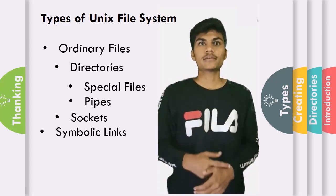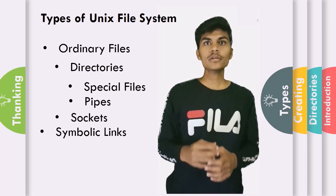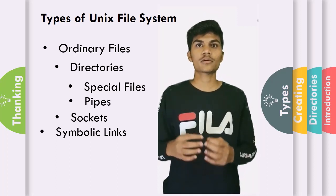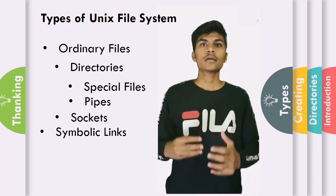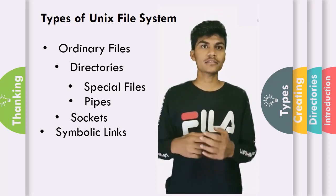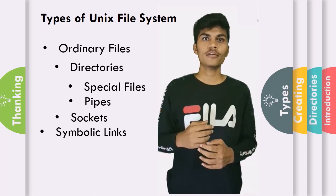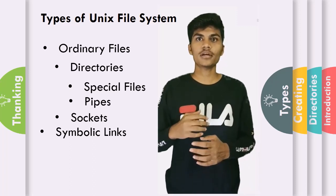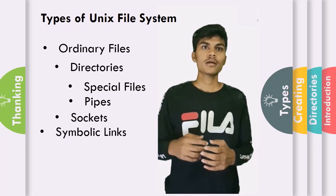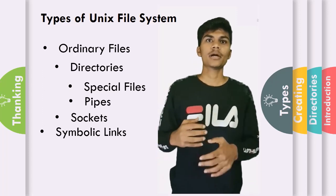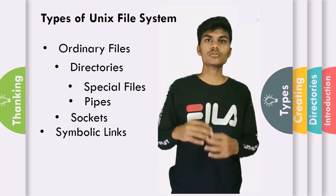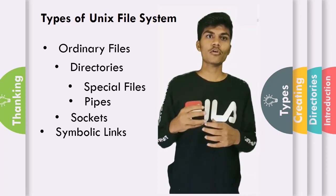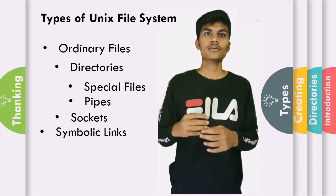A UNIX socket is a special file which allows for advanced inter-process communication. A UNIX socket is used in a client-server application framework. It is a stream of data very similar to network sockets, but it translates locally to the file system. In a long format output, it is marked by S.